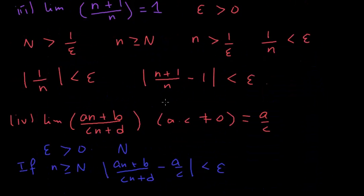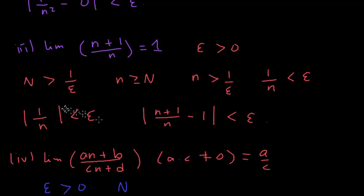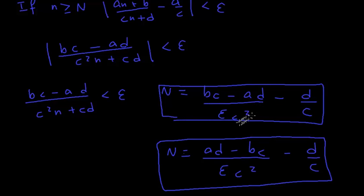So going back, whenever epsilon is arbitrary, we are able to find some N such that the condition holds. That N is (bc − ad)/(epsilon · c²) − d/c when bc − ad is greater than zero, and (ad − bc)/(epsilon · c²) − d/c when bc − ad is less than zero. That's the essence of the limit definition — we can always find a natural number such that beyond it, the difference between the sequence and the limiting value is less than epsilon. This completes the proof. Thanks for watching, hope you enjoyed this video!